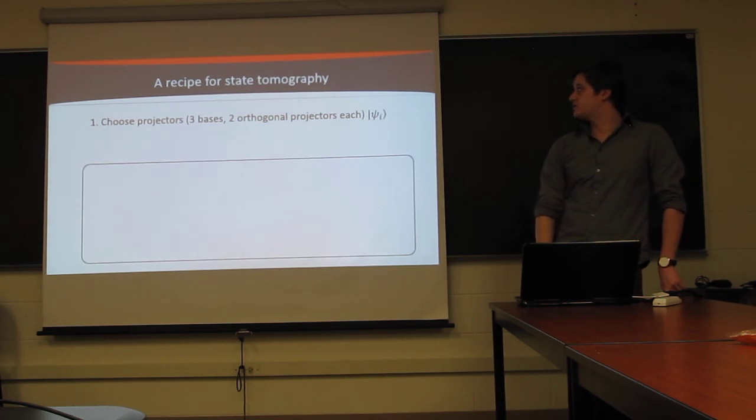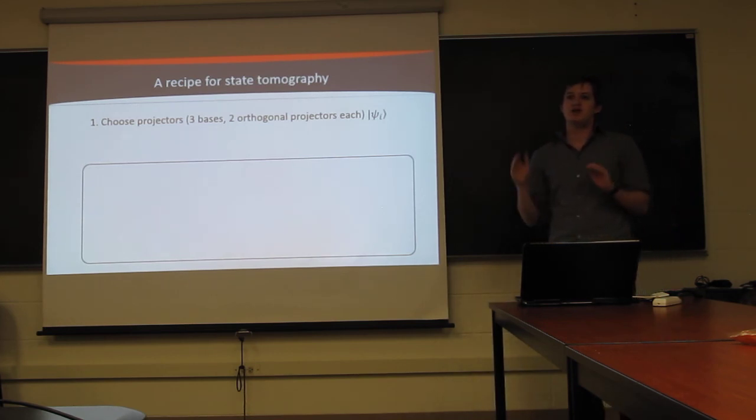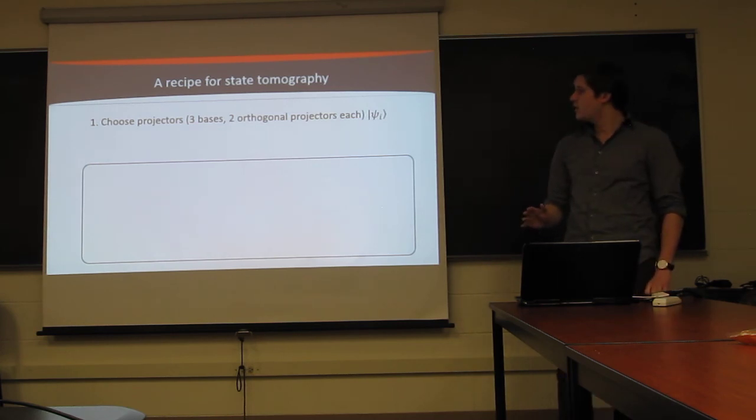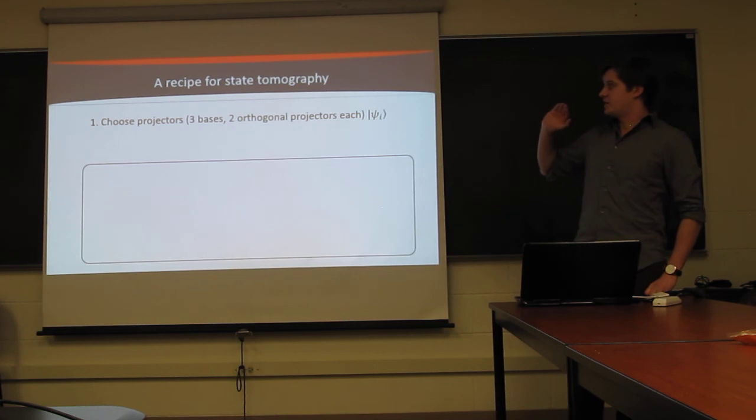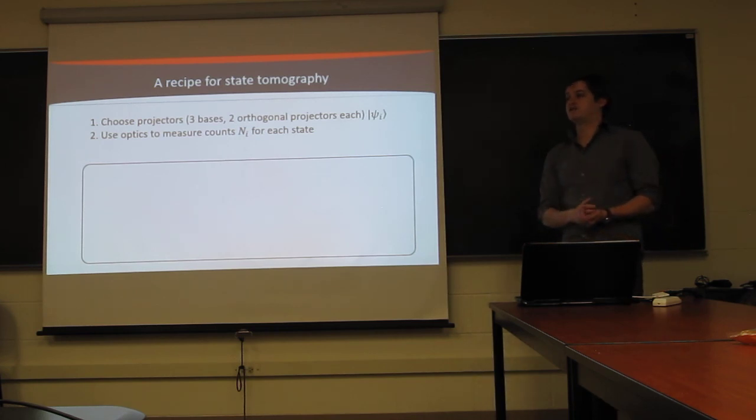All right, so let's now just go through a recipe for state tomography. So what you need to do in order to just hammer one out. First, you're going to start, obviously, by choosing your projectors. So that's going to be three bases, two orthogonal states per basis. And then you're going to use your quarter wave plates, your half wave plates, your polarizers, to project onto each of these states and get some number of counts.